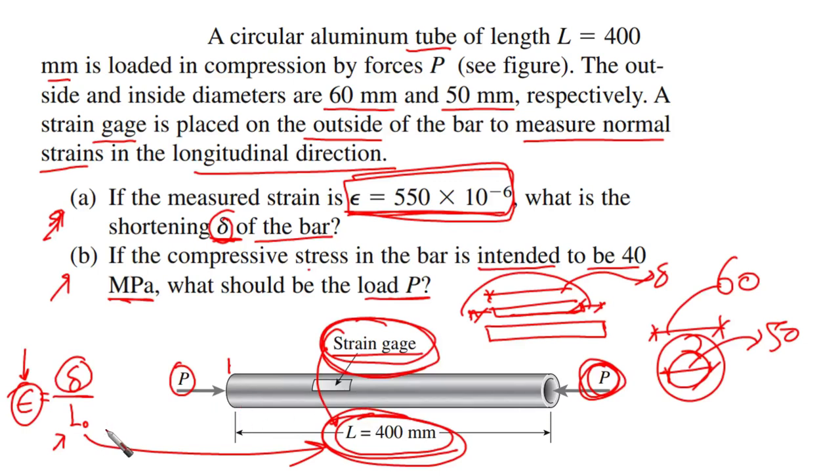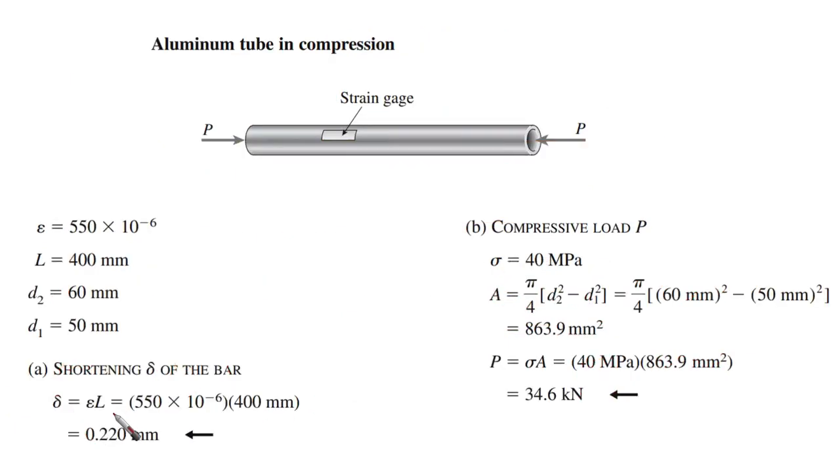This is the aluminum tube in compression. All the input data that we can obtain from the example are given for us. This is ε strain and this is L, the total original length. We have d₂ and d₁, which is the outer and inner diameter respectively.